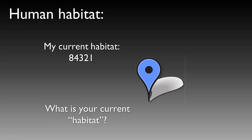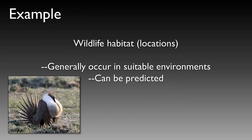Currently my habitat can be defined as 84321, or my zip code. There are many other defining characteristics of this area or region, but certainly my habitat is at 84321, the zip code for Logan, Utah. Another example, more related to wildlife, would be wildlife habitat locations. By sampling wildlife habitat locations, we can start to use GIS to do some predictive modeling.